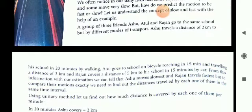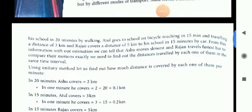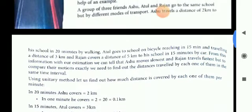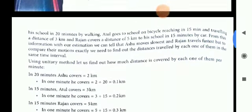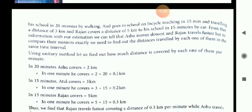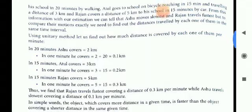A group of three friends: Ashu, Atul and Rajan go to the same school but by different modes of transport. Ashu travels a distance of 2 kilometers in 20 minutes. Atul covers a distance of 3 kilometers in 15 minutes. And Rajan covers a distance of 5 kilometers in 15 minutes. Then calculate the speed.